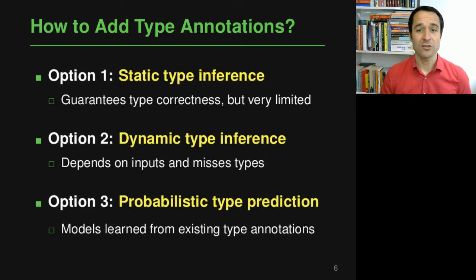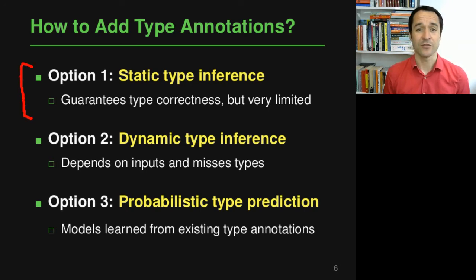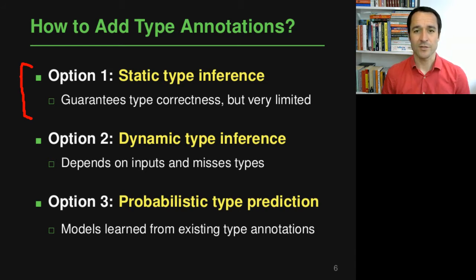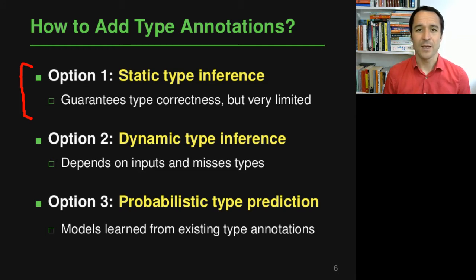Instead of adding type annotations manually, there are a couple of options to do it automatically. Option one is static type inference — a conservative static analysis that reasons about values in your code and propagates information so that it can tell for some locations what the return type or parameter type should be. These approaches typically guarantee type correctness; they only report a type if they know for sure. The downside is it's pretty limited — many types can't be predicted this way, so it gives you some types but misses a lot of others.